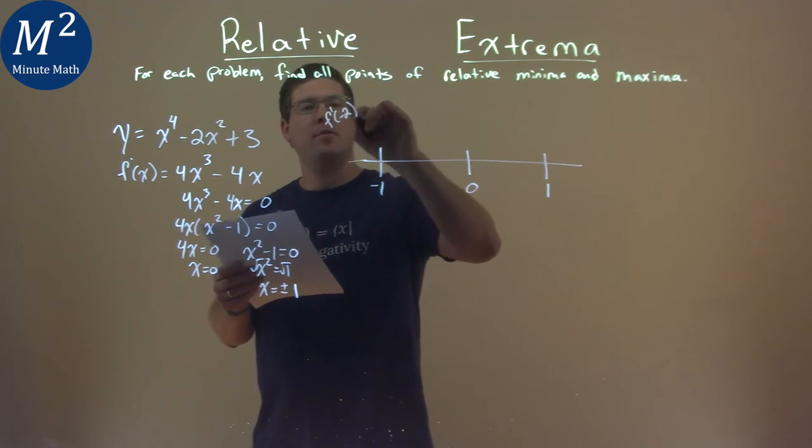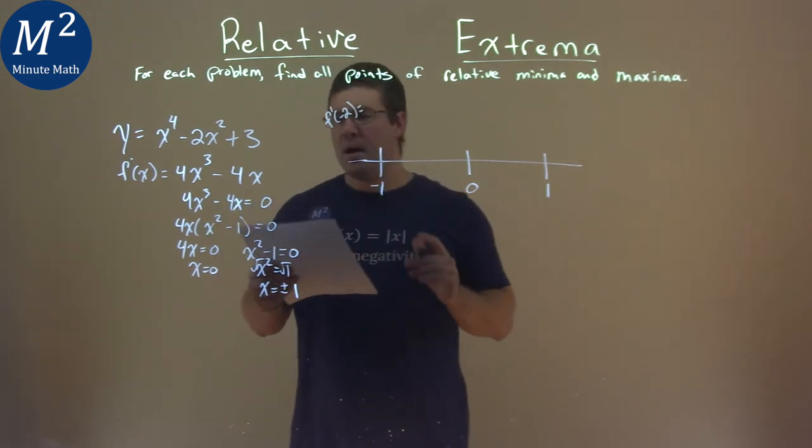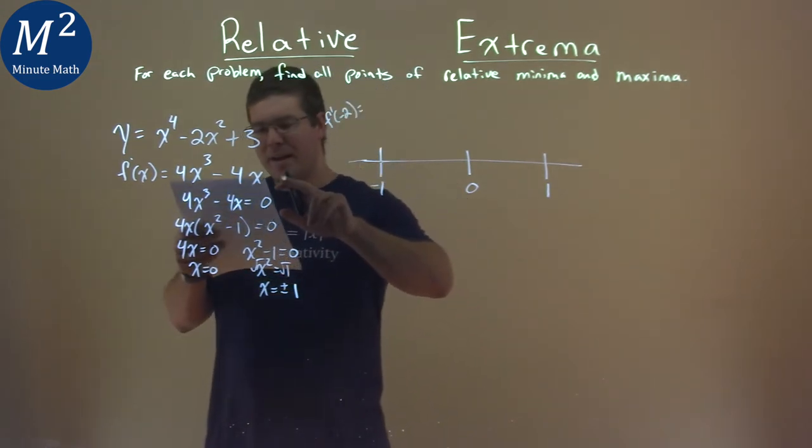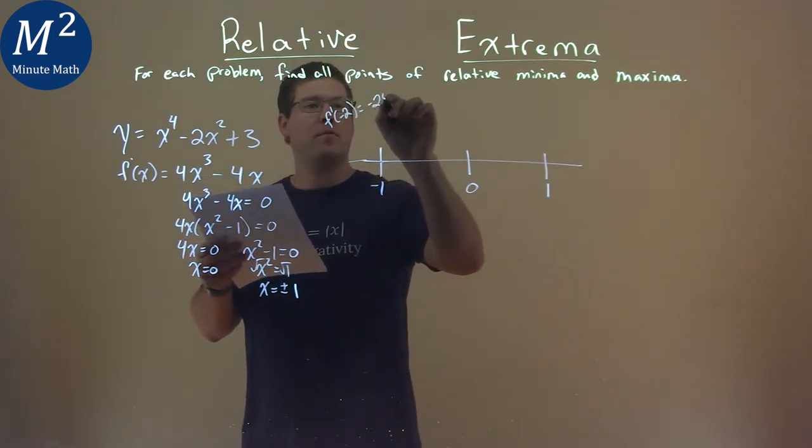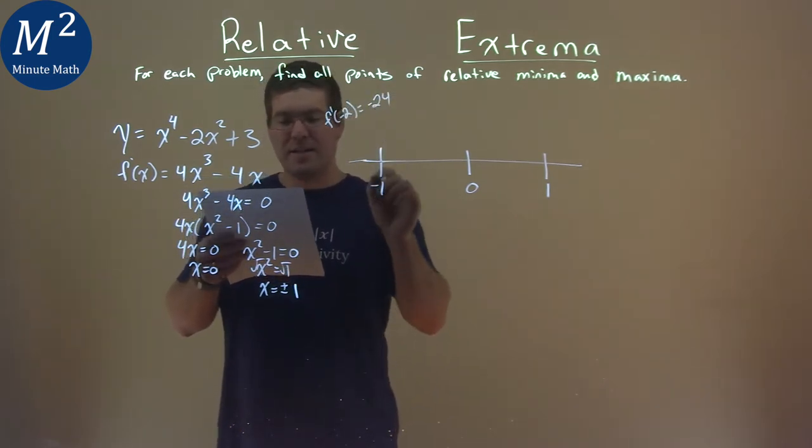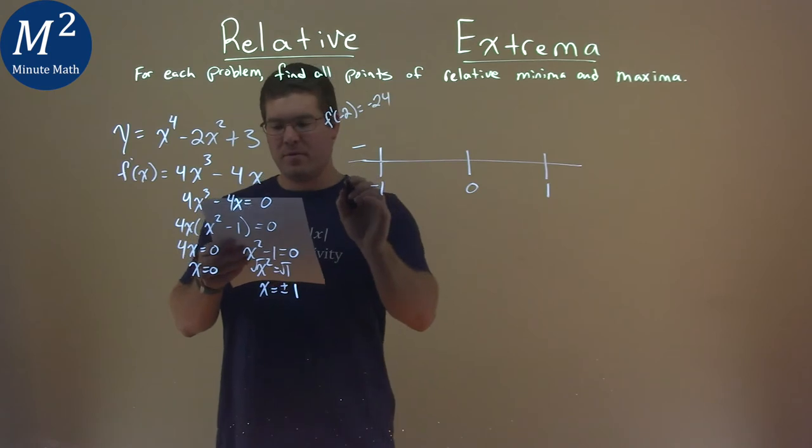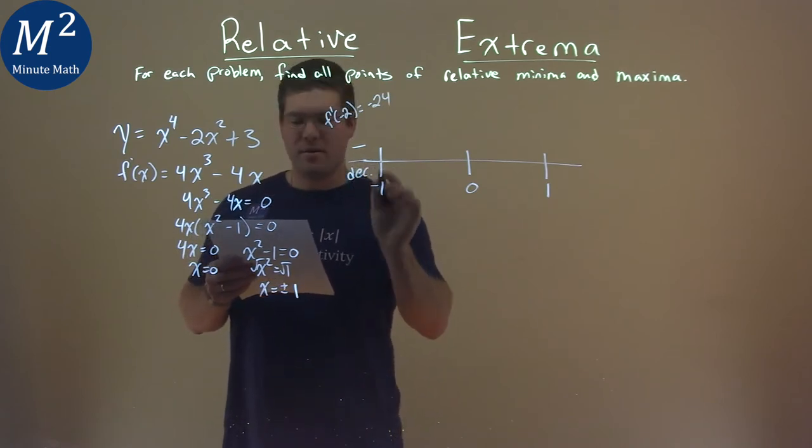So I found some for you already. I found what f prime of negative 2, a value that was less than negative 1, plug it into my derivative, and I get a negative 24. I just care that it's negative, and so therefore we are decreasing on that interval.